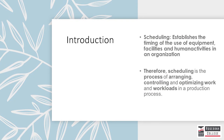In the previous learning unit, we looked at aggregate planning, which happens in the intermediate term. We are now moving to planning that organizations engage in in the short term, which in essence is what short-term scheduling is. When an organization undertakes scheduling, it establishes the number of resources that will be needed and the sequence in which they will be used.